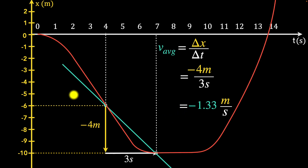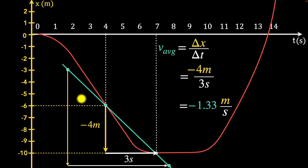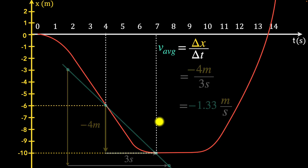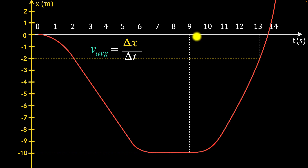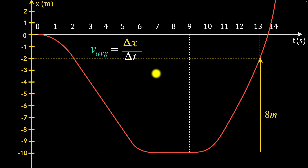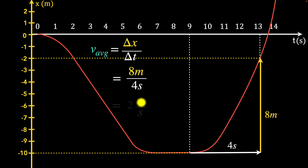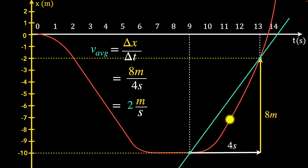Your turn: calculate the average velocity between nine and 13 seconds. The change in position delta x goes from minus ten to minus two, that's eight meters in the positive direction. The time interval from nine to 13 seconds is four seconds. So the average velocity is eight meters divided by four seconds, giving two meters per second. Geometrically, that is the slope of the secant line, which is sloping upwards — so it should be positive. Everything makes sense.